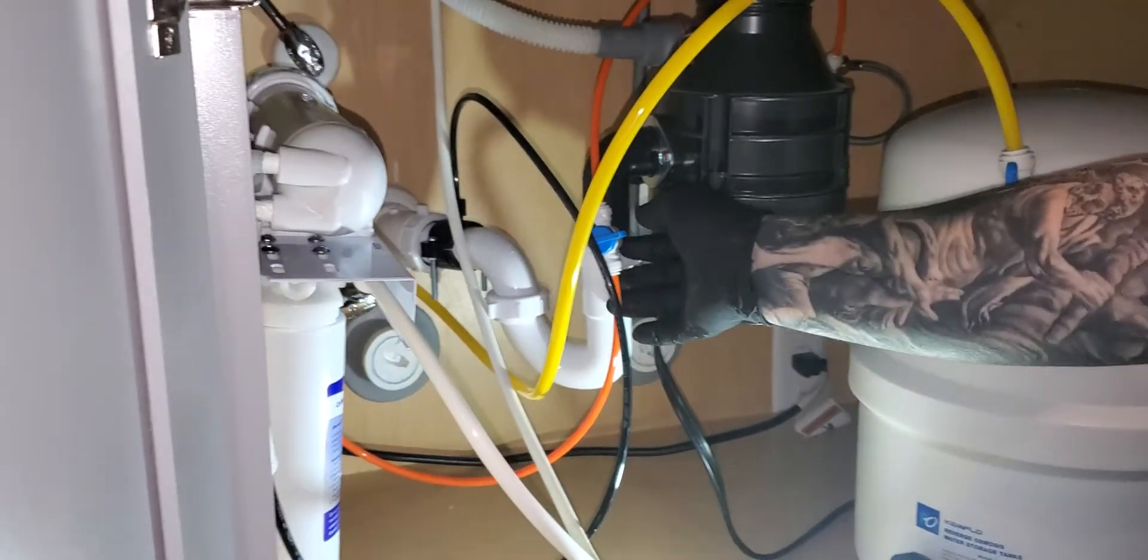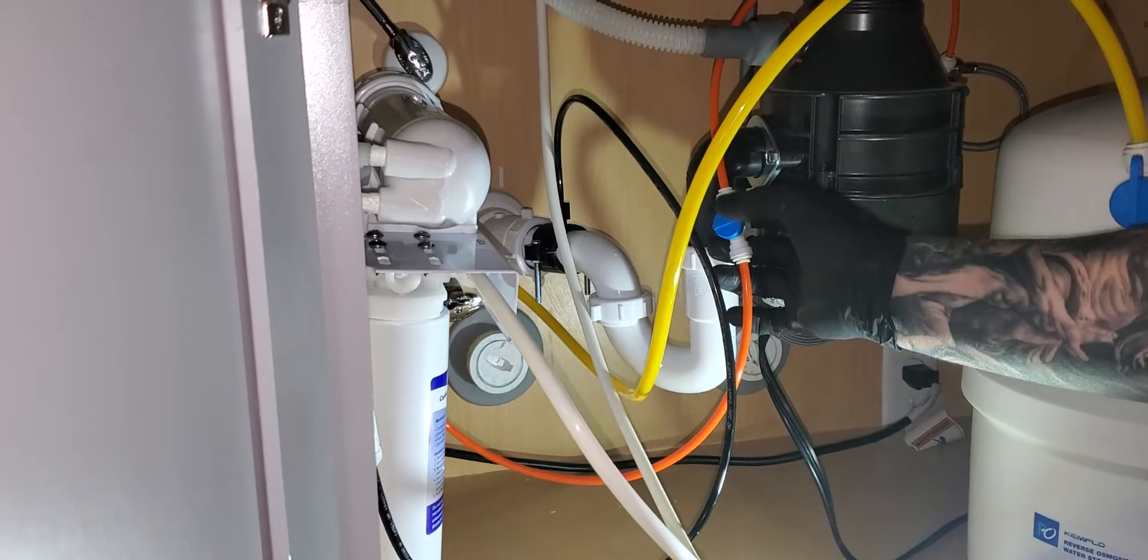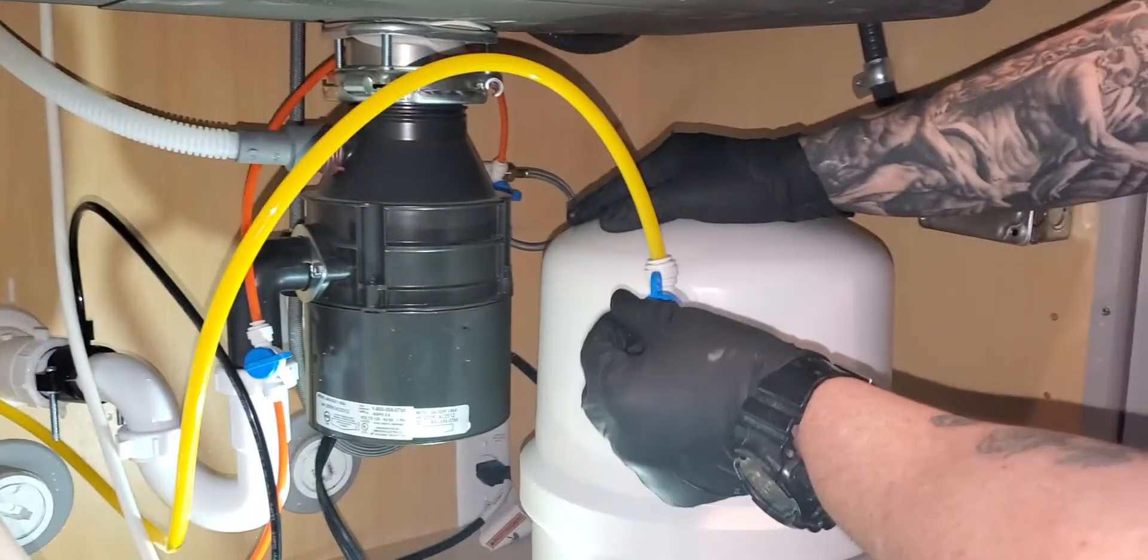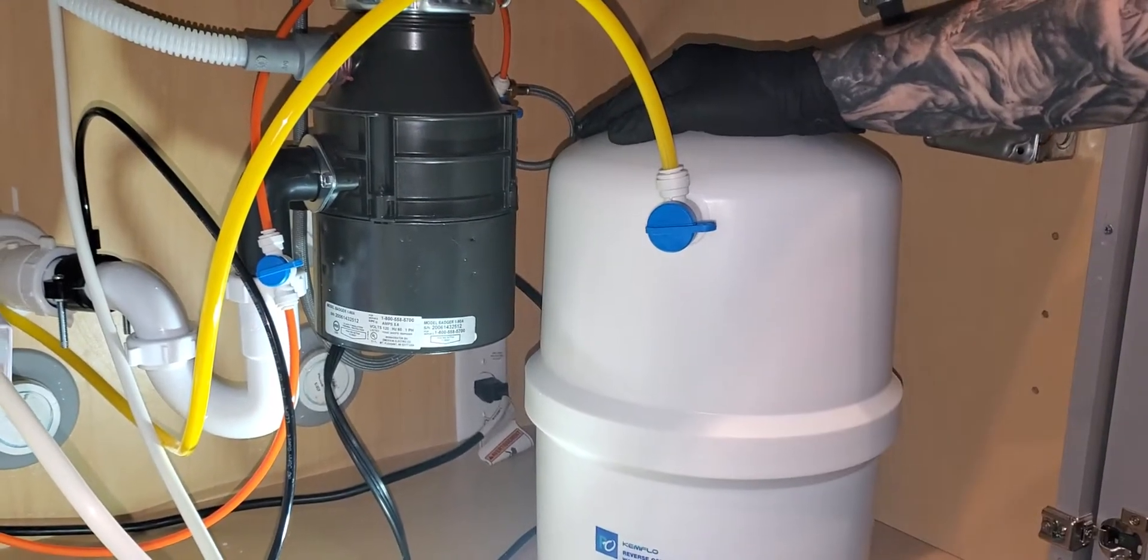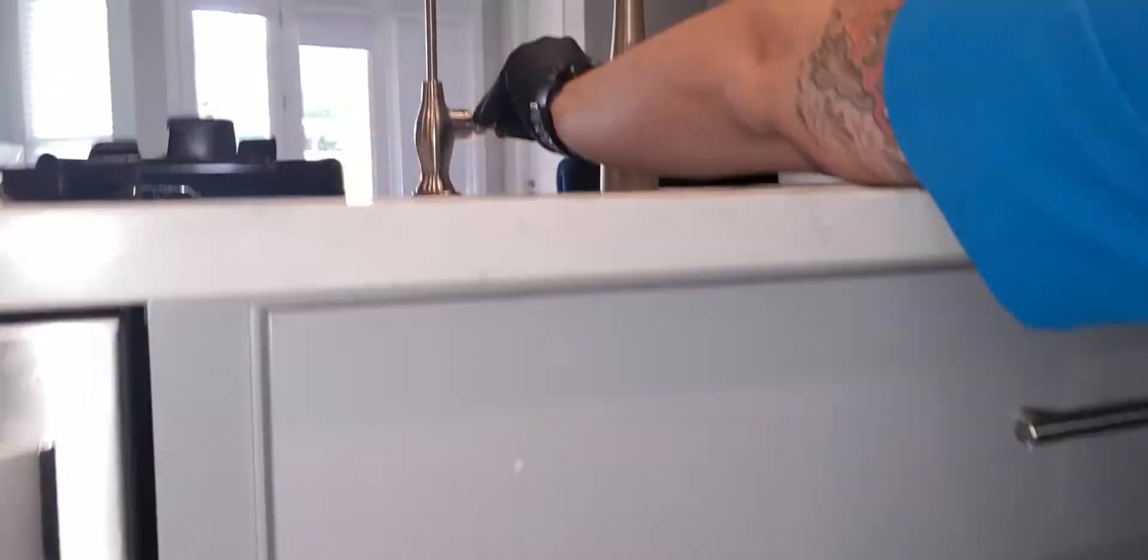If you have an additional shutoff like this, you want to make sure this is off, and that's already off because it's perpendicular. This is the holding tank shutoff - turn that off. Then you check the faucet to make sure there's no water.